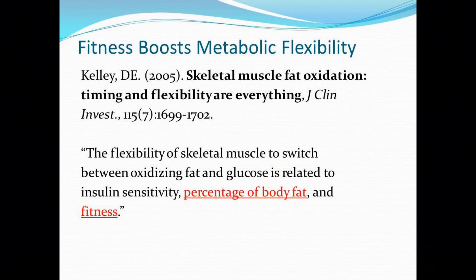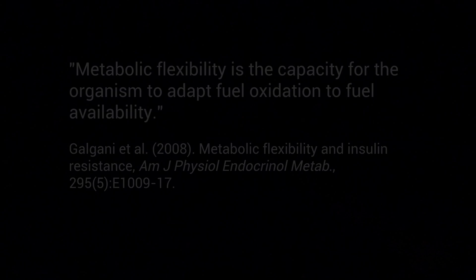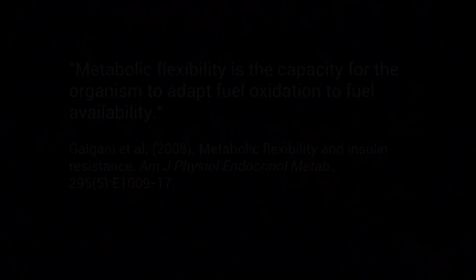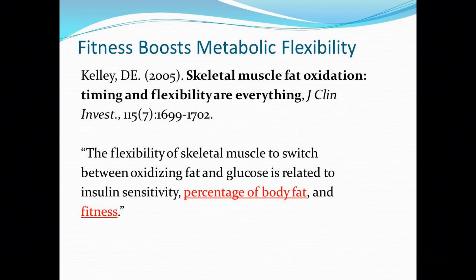Metabolic flexibility has to do with the ability to switch between burning fat and sugar and vice versa. It is the capacity to adapt fuel oxidation to fuel availability. So if someone were to go on a higher carbohydrate diet, they would increase their glucose oxidation. And if they were to go on a higher fat diet, they would increase their fat oxidation. Essentially, it's the ability to metabolically be flexible with the fuel that's available and to use it accordingly.